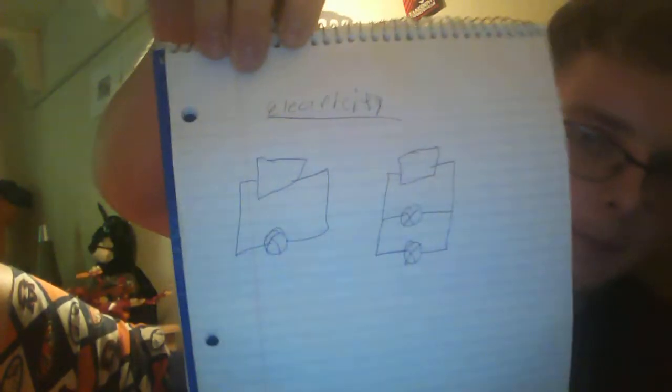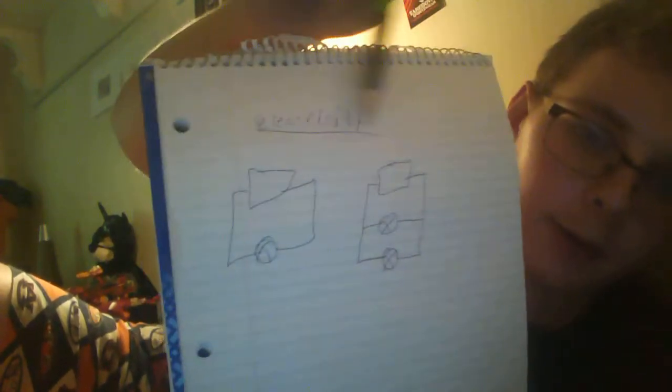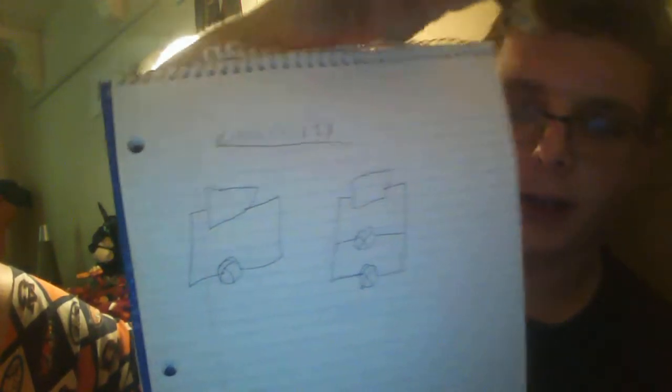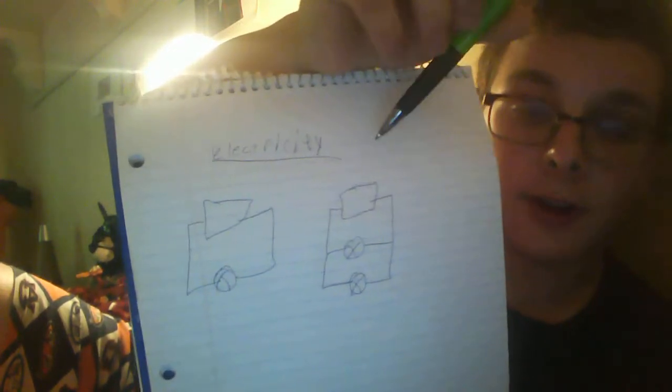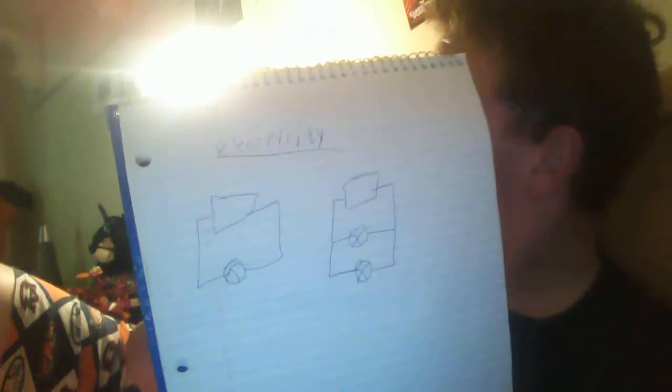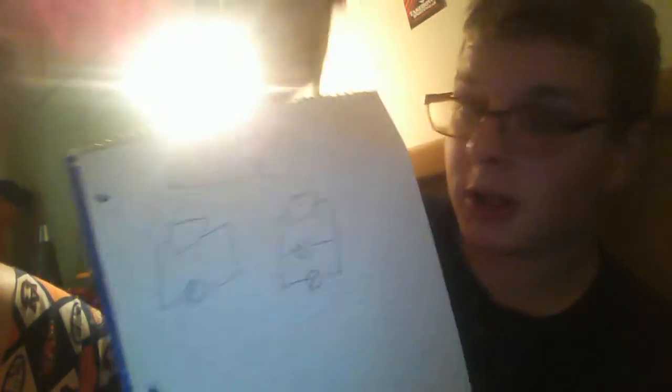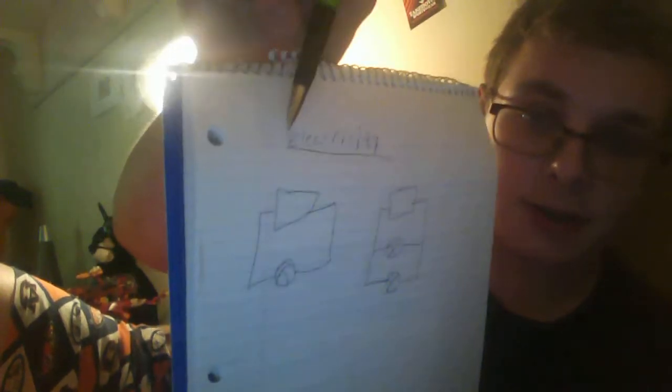We have a circuit that looks like this and a circuit that looks like this. This one is a parallel circuit, meaning it has two pathways — so if I take this one out, the circuit is still going to work. This one's a series circuit.